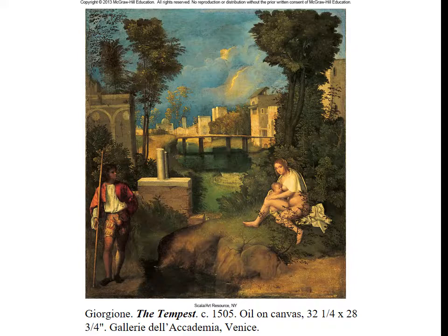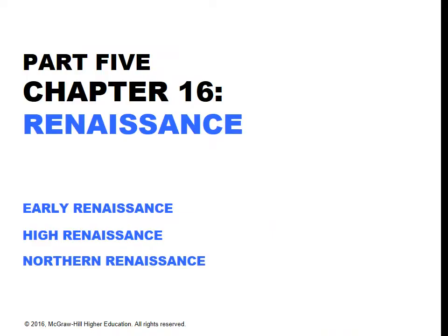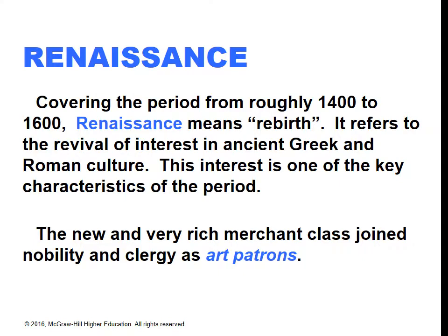Moving on, here's an overview of the chapter. We have the Early Renaissance, the High Renaissance, and the Northern Renaissance. The Early Renaissance began in Italy around 1400 or so. The High Renaissance ended around 1520. With something of a delay, the Renaissance also hit countries in the north a little later. So we have the period from about 1400 to 1600, and Renaissance means rebirth — it's interesting that we typically use the French word. The Italian is risorgimento, also meaning rebirth.